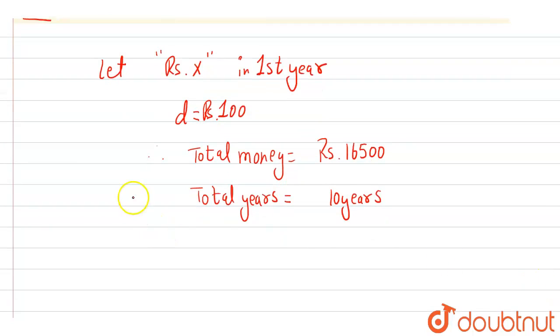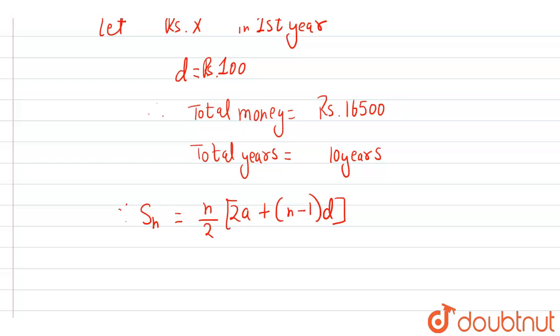Now, the formula for sum of n terms in an AP is: Sₙ = (n/2)[2a + (n-1)d].